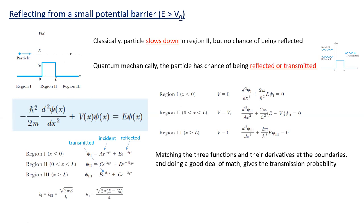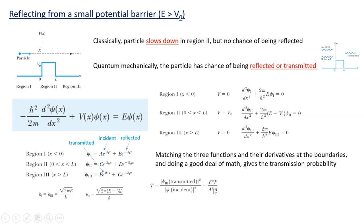The idea is to take these three solutions and impose boundary conditions: the solutions must match at the boundaries and their derivatives must match at the boundaries, and the wave function must go to zero at infinity so it can be normalized. That's a good deal of math — it can certainly be done and I'm happy to work through it with you — but we're just going to look at the transmission coefficient, which is |F|²/|A|², the amplitude of the transmitted wave over the amplitude of the incident wave.